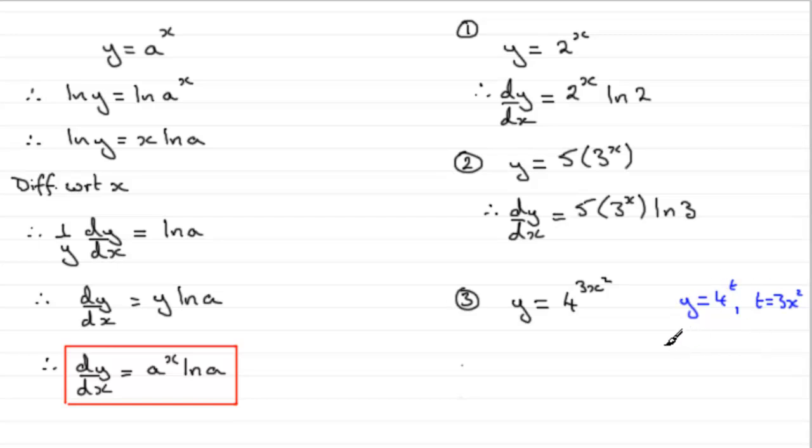So, using the chain rule, remember that dy by dx is equal to dy by dt times dt by dx. So, if we just border that off there,